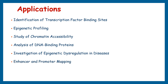ChIP sequencing can identify enhancer regions — non-coding DNA sequences that play a role in enhancing gene transcription — and can also map promoter regions, which are essential for initiating gene expression. Understanding these regions and their interactions with regulatory proteins provides insights into gene regulation. ChIP sequencing can also be used in combination with other techniques to study nuclear architecture and chromosome conformation, helping to understand how different genomic regions interact in 3D space.